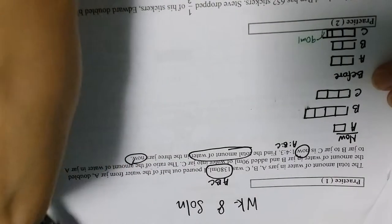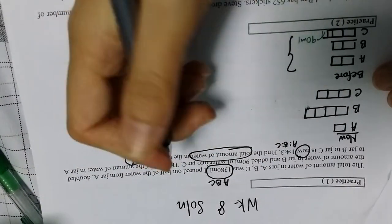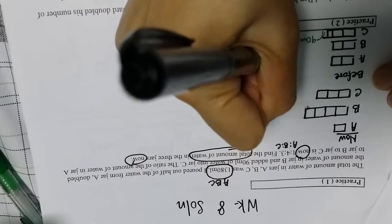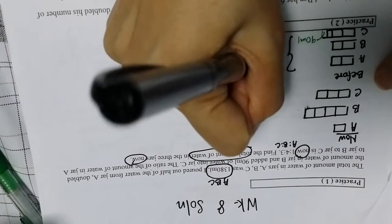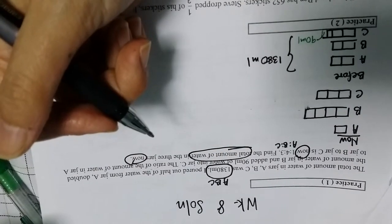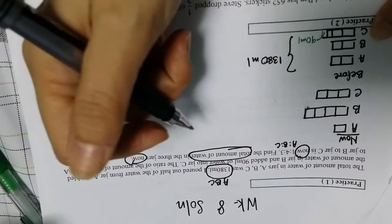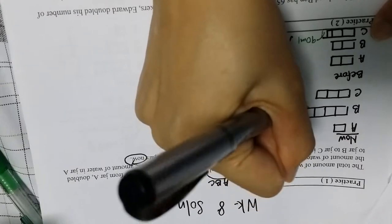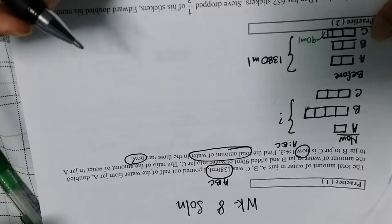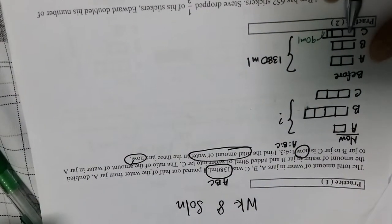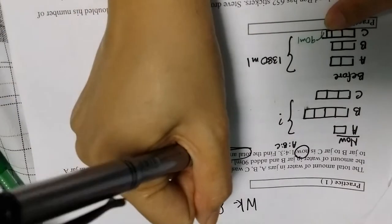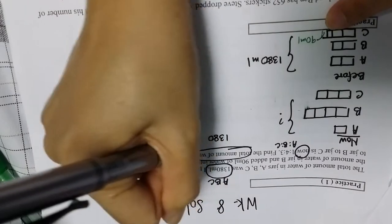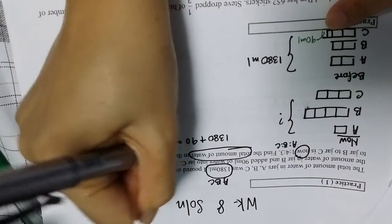And so therefore the whole thing before is actually 1380, which is stated here, okay? 1380 ml. So let's work everything out based on before, and this is what we are looking for. Okay, so 1, 2, 3, 4, 5, 6, 7. So therefore must add this instead.